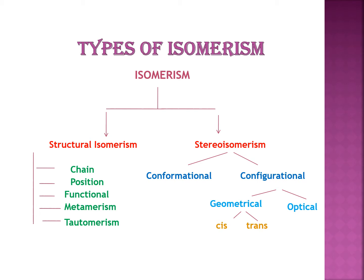Structural isomers are further classified into five categories: chain isomerism, position isomerism, functional isomerism, metamerism, and tautomerism.